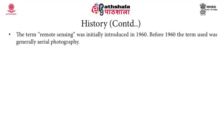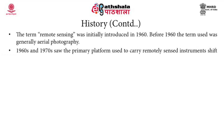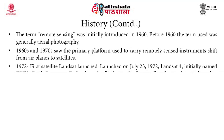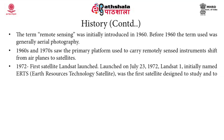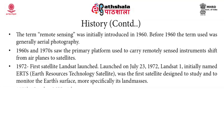The term remote sensing was initially introduced in 1960. Before 1960, the term was generally used for aerial photography. The 1960s and 70s saw the primary platform used to carry remotely sensed instruments shift from aerial planes to satellites — that is, from airborne to spaceborne. In 1972, the first satellite Landsat was launched on July 23, 1972. It was initially named as Earth Resources Technology Satellite and was the first satellite designed to study and monitor the earth's surface features, more specifically its land masses.